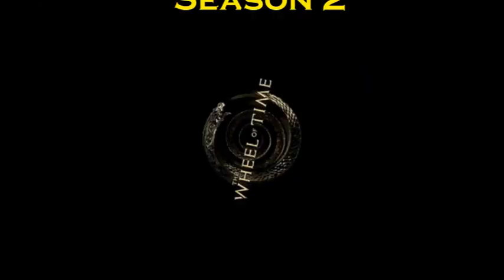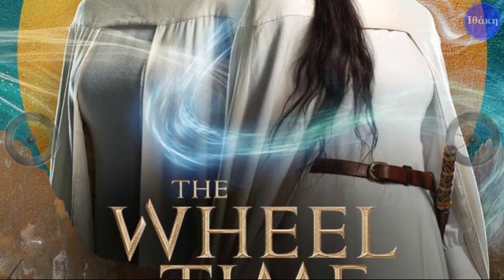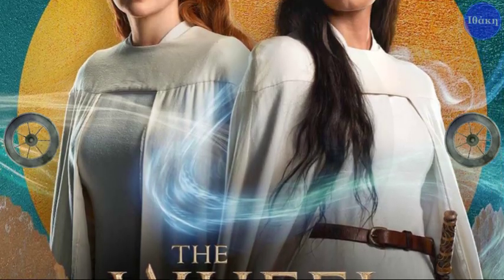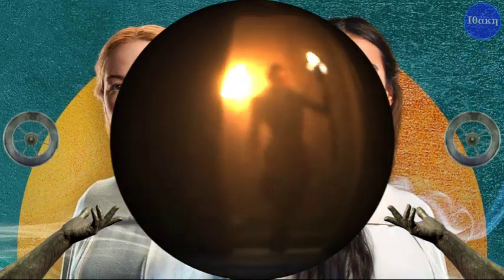The Wheel of Time Season 2 Episode 6. Although the previous episode was called Damane, this is the one in which they dive into what it means for Egwene to be captured.